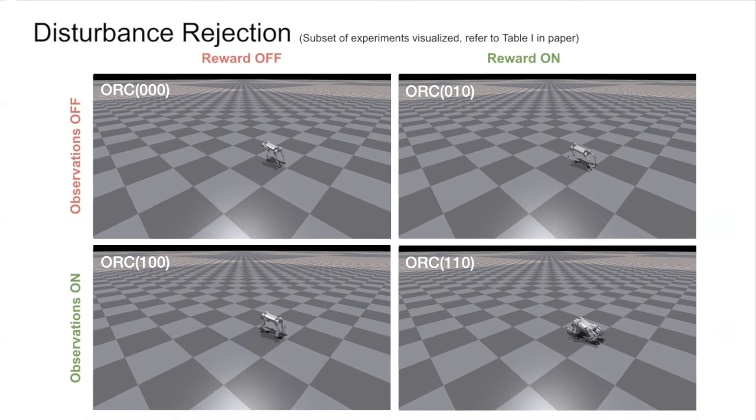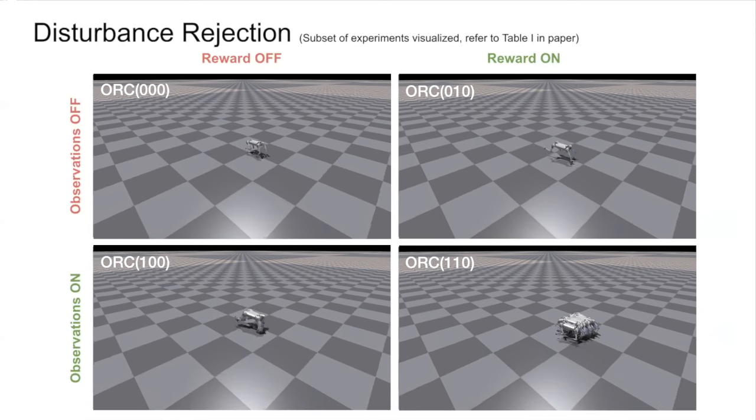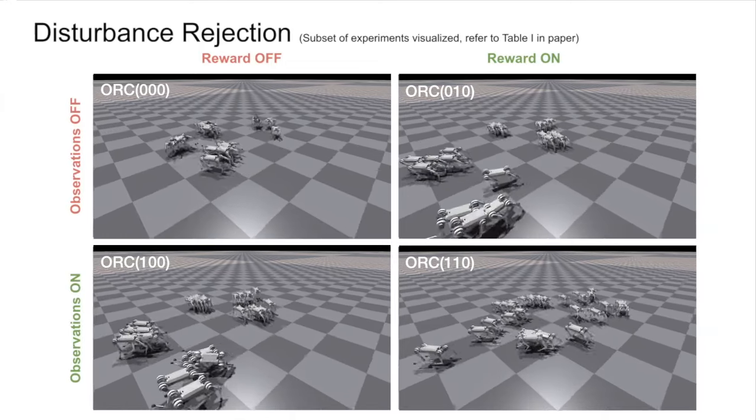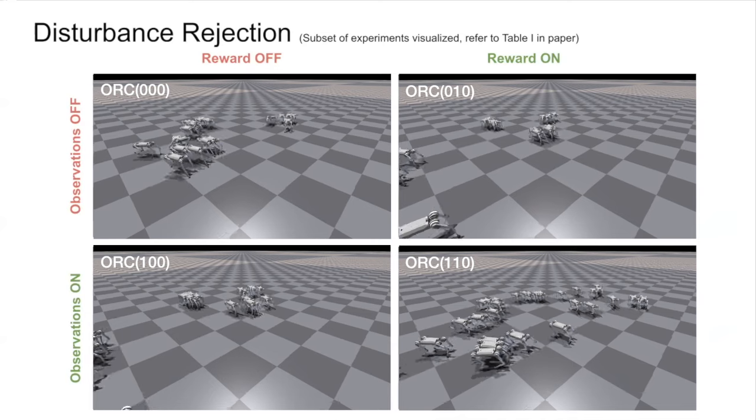We tested the same policies for rejecting pushes up to 3.5 meters per second and found that on average, policies trained with rewards perform better than those without, even when they didn't have phase observations to be Markov.